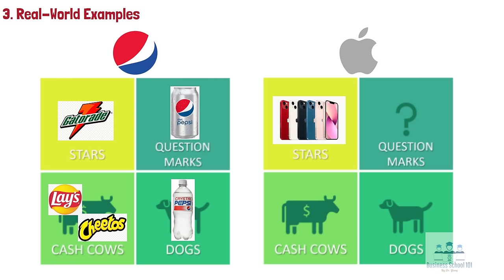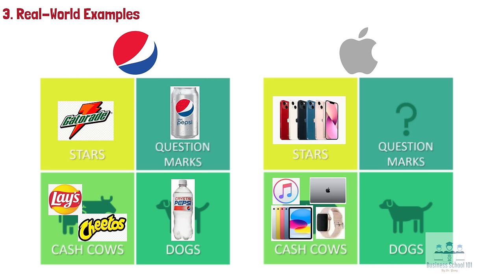Second, Cash Cows. For Apple, several products fall under the cash cow category in Apple's BCG matrix. Those products are iTunes, MacBooks, iPads, and Apple Watches. However, please keep in mind that as the computer industry slowly becomes portable and mobile, the need for laptops and desktops also decreases.